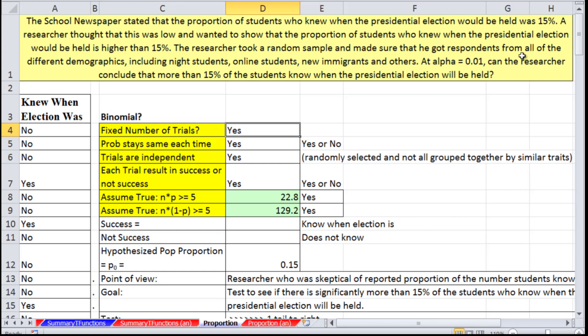The researcher took a random sample and made sure he got respondents from all the different demographics, including night students, online students, new immigrants, and others. At alpha 0.01, can the researcher conclude that more than 15% of the students know when the presidential election will be held?